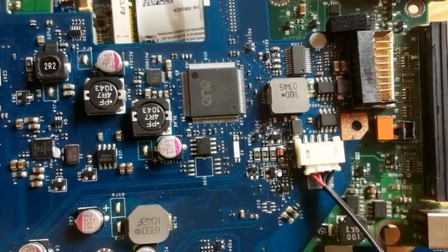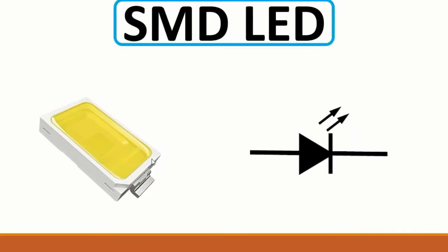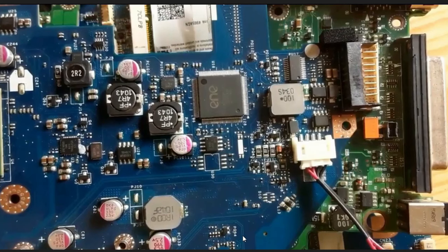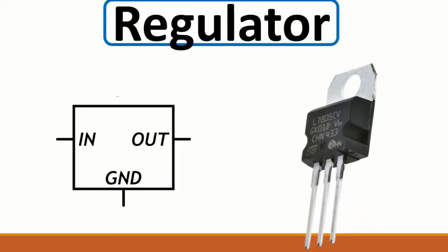Then we have the SMD LED - a light-emitting diode. It emits light, represented by two arrows in the symbol, which is the same as a normal diode symbol plus two arrows meaning emitting light. Let's see the motherboard if we can find any LED - we don't have any LED here. Then we have a voltage regulator.